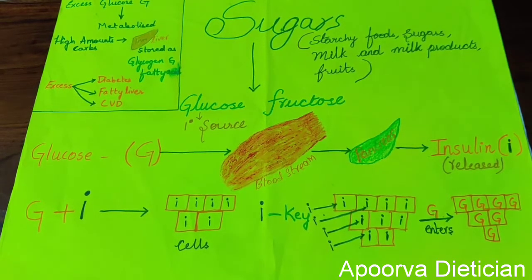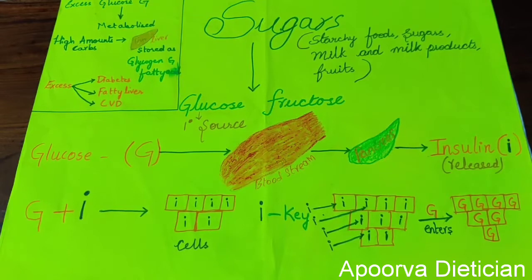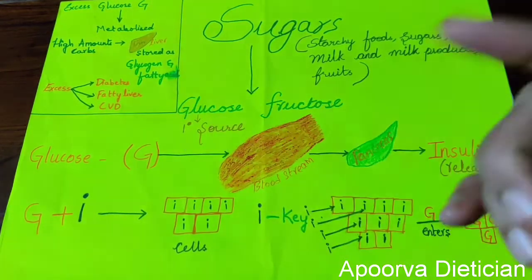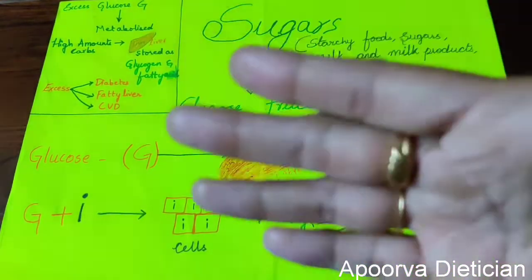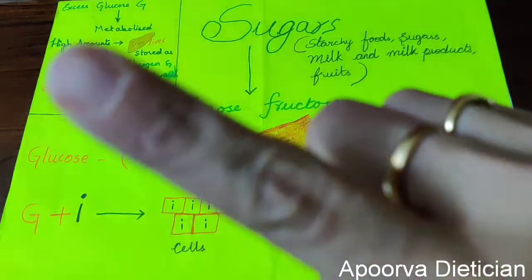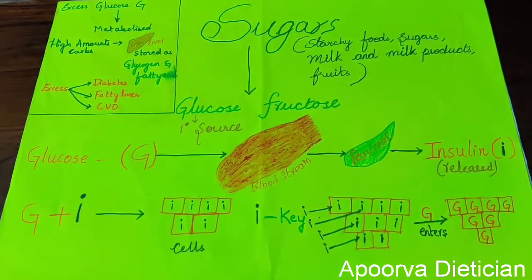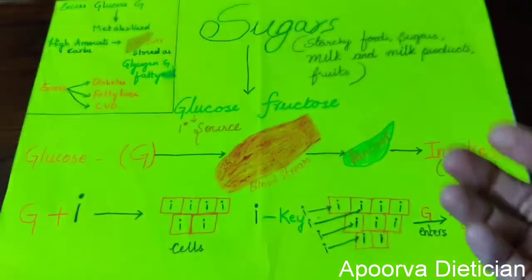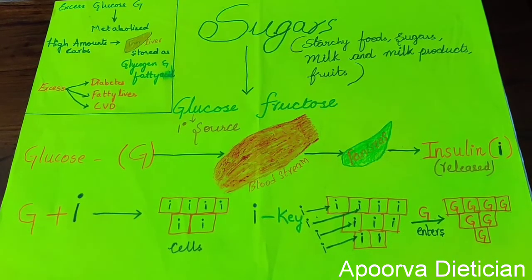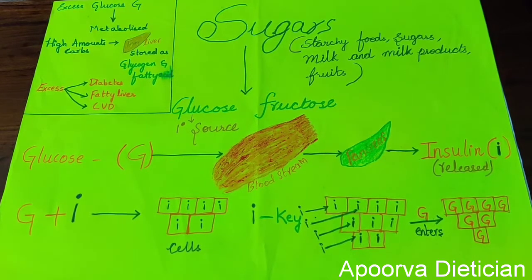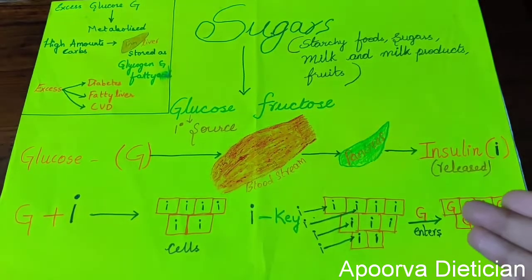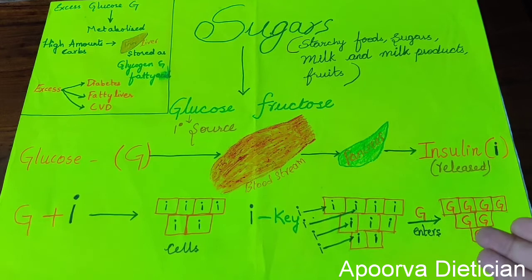Try to limit your intake of foods high in carbohydrates and fat so the liver doesn't store excess and cause problems. Diabetes is also caused by high glucose or sugar intake. However much glucose you consume, insulin is released equally to ensure glucose enters the cells and performs various activities.